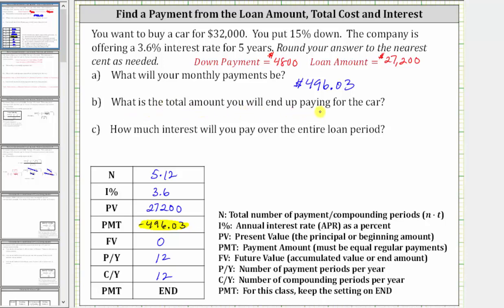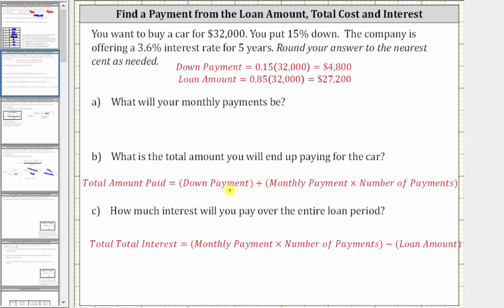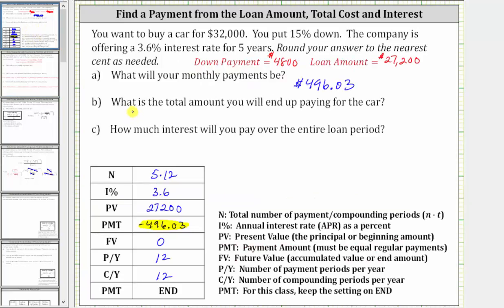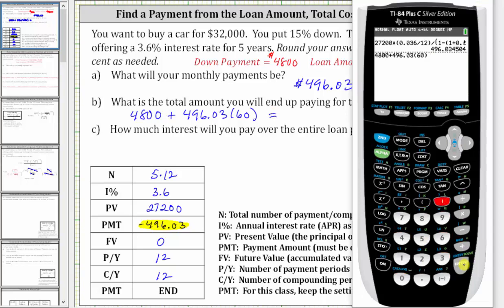Next, what is the total amount you will end up paying for the car? The total amount paid equals the down payment plus the monthly payment times the number of payments. The down payment is $4,800, plus the monthly payment of $496.03 times 60 payments. Going back to the calculator, the total cost is $34,561.80.